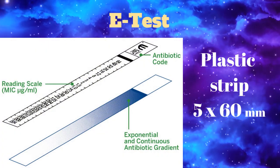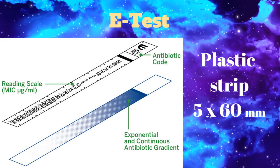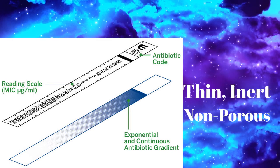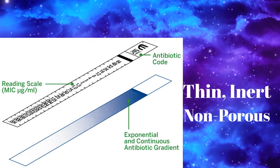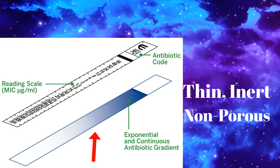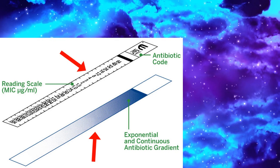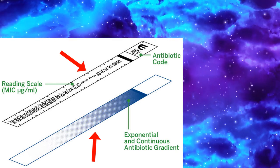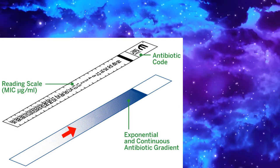The E-test uses a rectangular plastic strip of size 5 mm by 60 mm which is thin, inert and non-porous. The strip has two surfaces with antimicrobial concentration gradient on one side and numerical scale on the other side. There is a predefined continuous and exponential gradient of antibiotic on the strip.